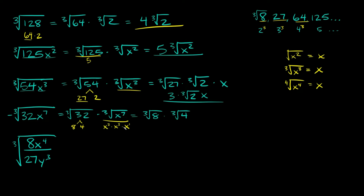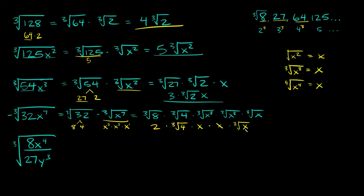So we break it out into the cube root of x cubed times the cube root of x cubed times the cube root of just x. Now we can simplify: the cube root of 8 is a perfect cube, equal to 2. The cube root of 4 stays as cube root of 4. The cube root of x cubed equals x, same again times x, times the cube root of x.